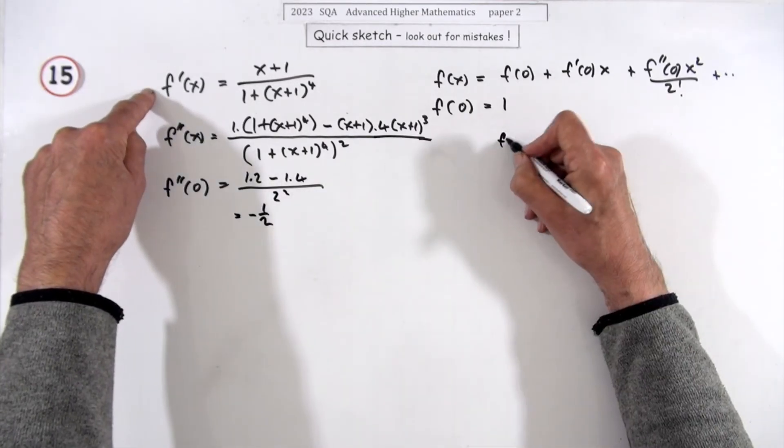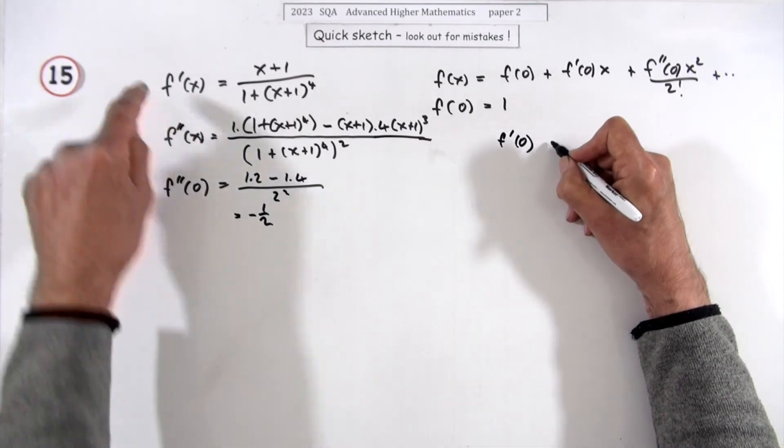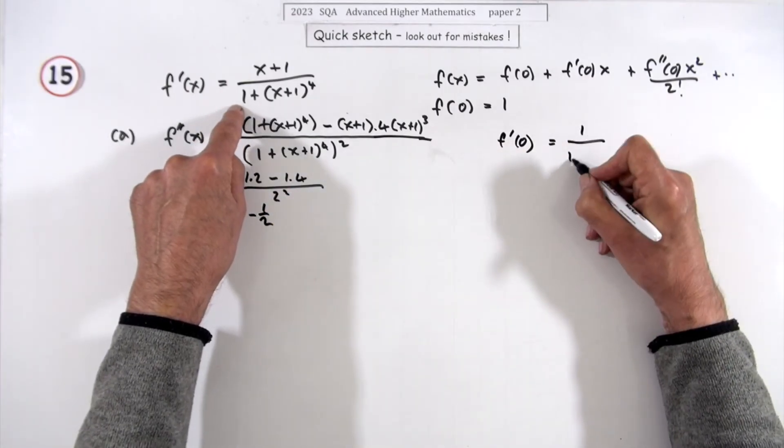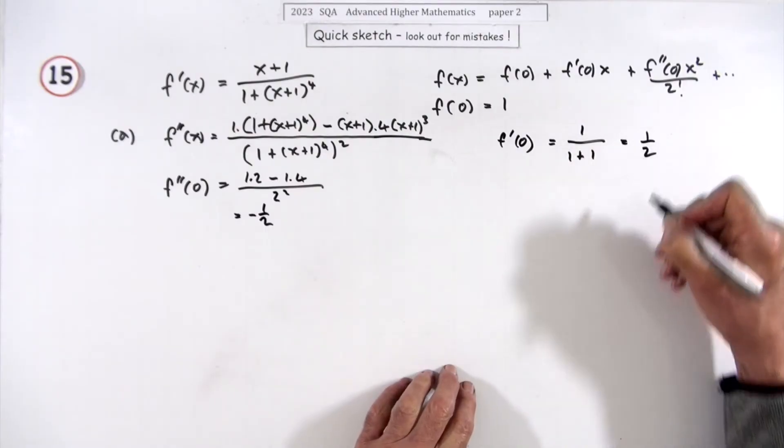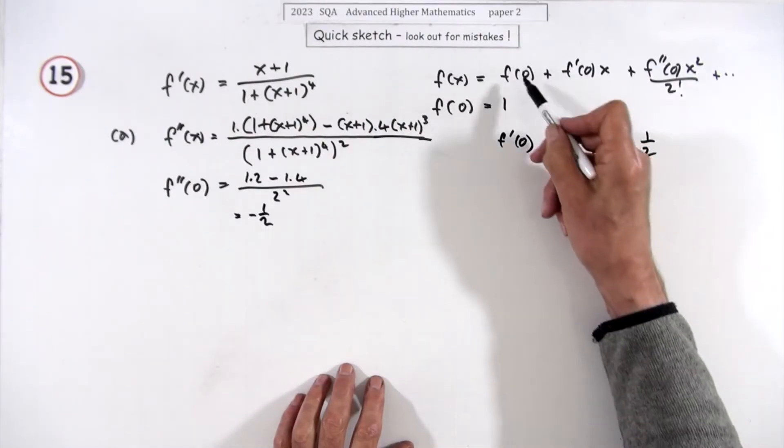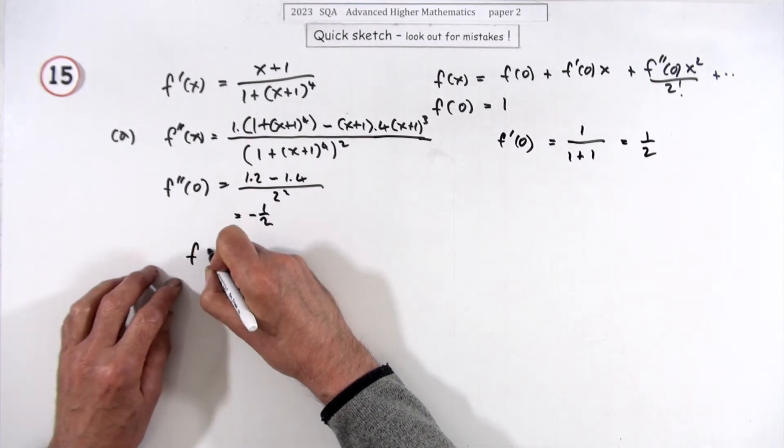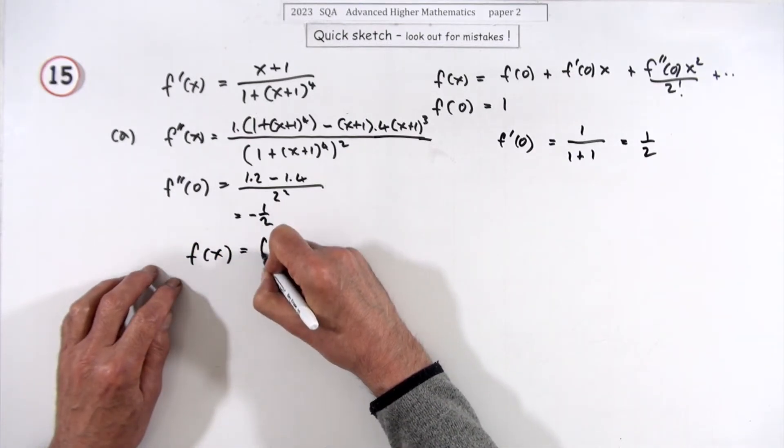And that first one, f'(0), is going to be 1/(1+1)⁴ which is 1 over 16, wait that's 1/2. So there's the parts you need, you've got these three parts. So the McLaurin expansion will be f(x) = f(0) + f'(0)x + f''(0)x²/2!.